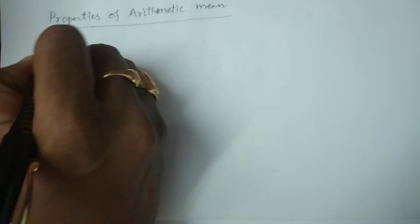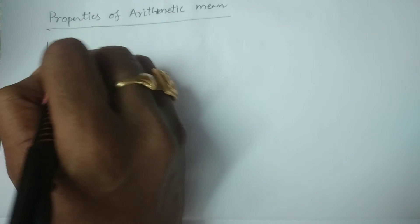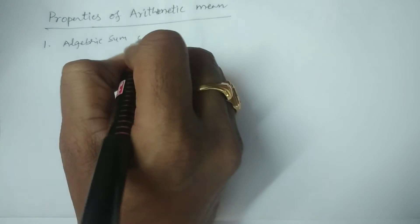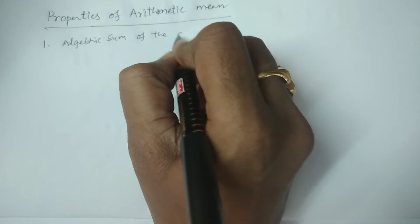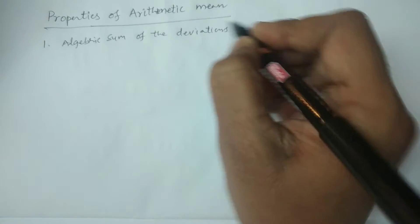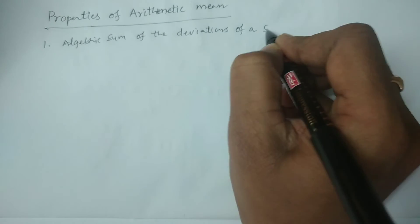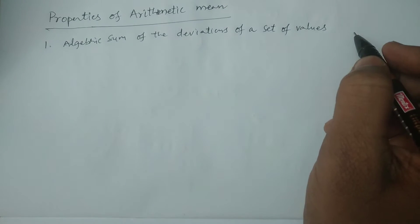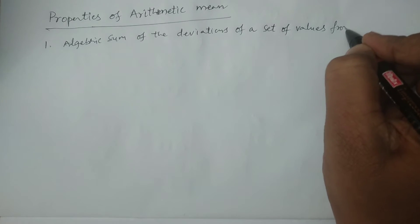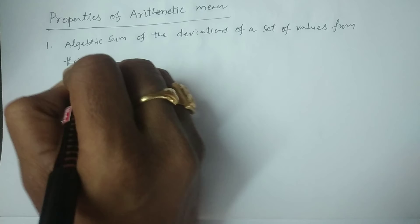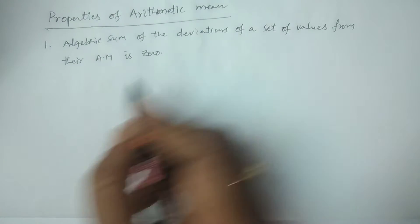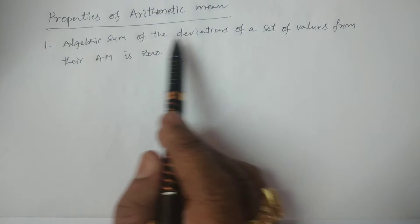What is the first property? Property number one: the algebraic sum of the deviations of a set of values from their arithmetic mean is zero.